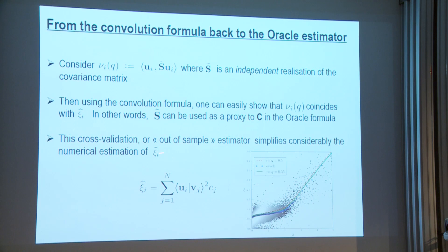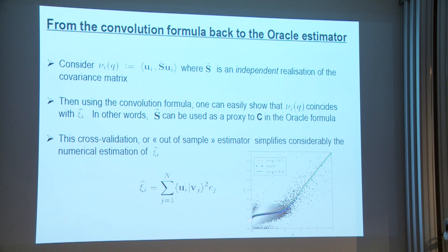Applied to real financial data, the point-wise estimates of this cross-validation formula are noisy, but when averaged they give the blue triangles, which agree well with the analytical formula (green line). This provides a practical way to estimate the dressed eigenvalues psi_i-hat needed for the L2-optimal estimator of the covariance matrix.